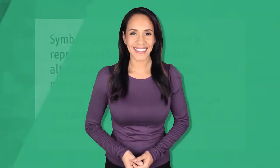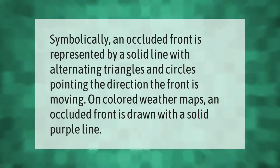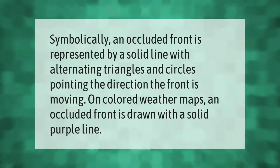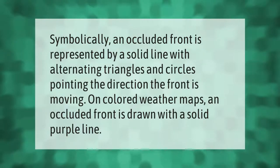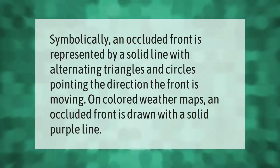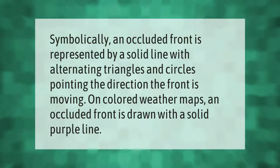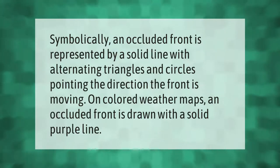Symbolically, an occluded front is represented by a solid line with alternating triangles and circles pointing in the direction the front is moving. On colored weather maps, an occluded front is drawn with a solid purple line.